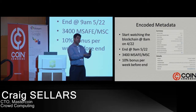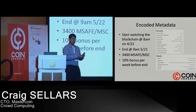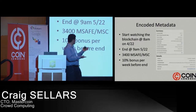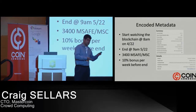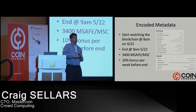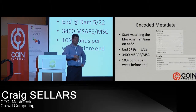For each week before the end, you'd get an additional 10% bonus. So for the first week, if you contributed a MasterCoin, you'd get 3,400 plus 40%. The second week you'd get 3,400 MadeSafe coins plus 30%, third week 20%, fourth week 10%, etc. And of course, everyone took advantage of the 40% because the whole thing sold out in five hours.